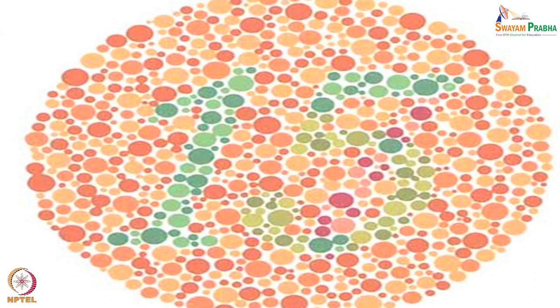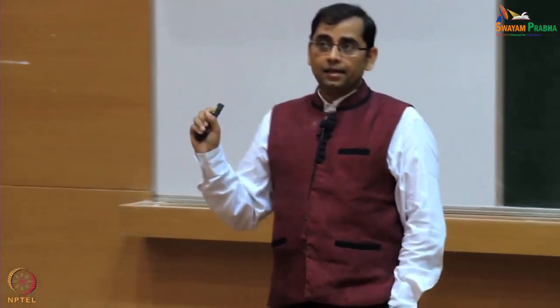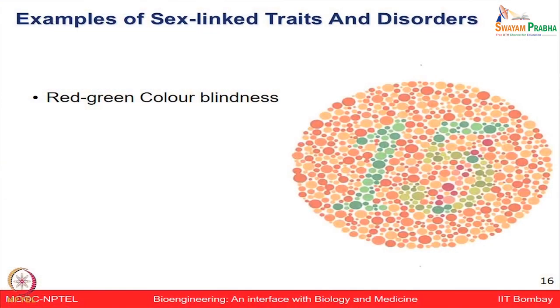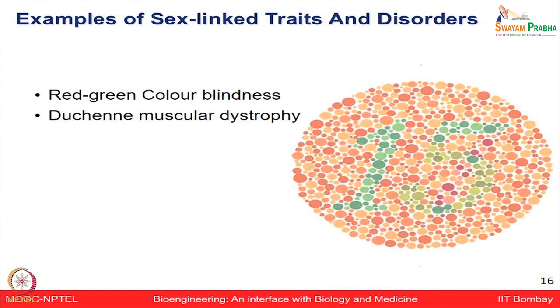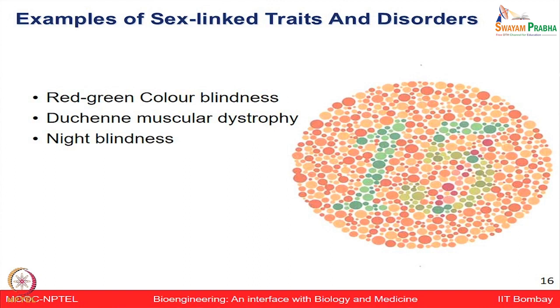If you look at this circle, can you read something in it? If you are not able to read it, you should pay close attention and go for some test — you might not be able to distinguish colors easily. This is a reality because for many exams, especially railways and military, they also test for color blindness. Many disorders which are sex-linked include red-green color blindness, muscular dystrophy, night blindness, and hemophilia. Many of these diseases are derived from the transmission of X-linked recessive traits.